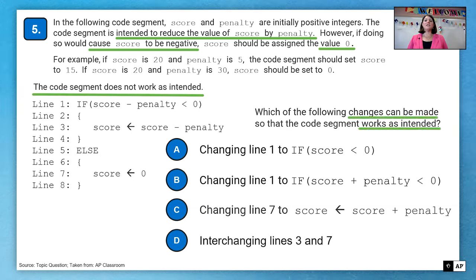And we are trying to find which of the changes that can be made to make it work as intended. So it looks like our if is correct. If score minus penalty is less than zero, we want to set it to zero. But that doesn't look quite right. So let's look at our answer choices. So should we change line one to if score is less than zero? Doesn't seem right because score should be positive to begin with. So not A. Change it to score plus penalty. Both B and C talk about adding penalty to the score. Nowhere in our question does it talk about adding the penalty. So I'm going to eliminate choice B and choice C.